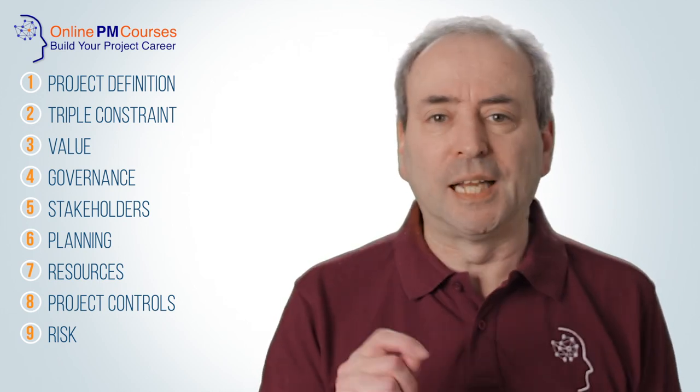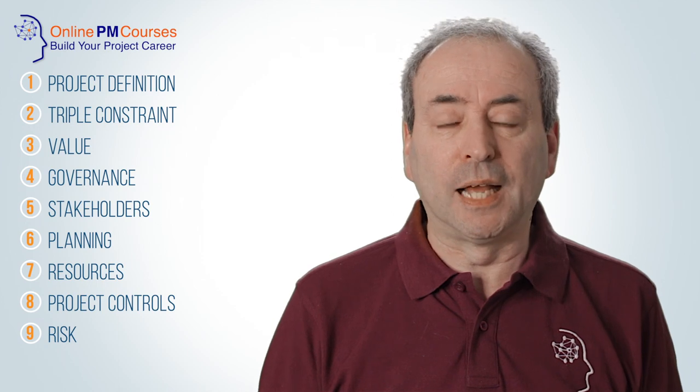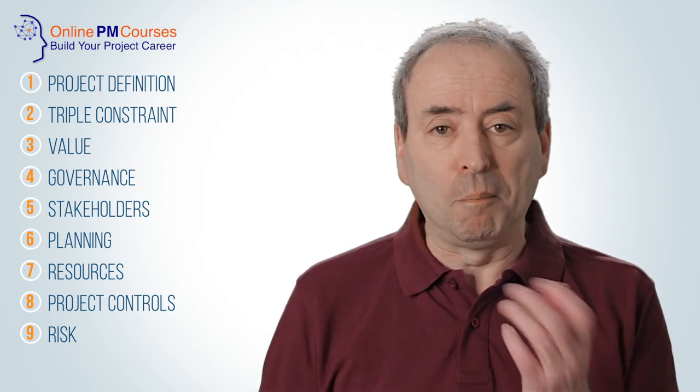The last two of my top 10 project management concepts are both project controls. At number nine it's risk — the concept that projects are uncertain and that uncertainty leads to consequences. A risk is an uncertainty that can have an impact upon outcomes. Once you understand that, we immediately see that risk is principally characterized by the level of uncertainty, the likelihood that it'll happen, and the impact that it will have if it does. Because projects are novel and need to be done within a fixed timescale using only available resources, projects are inherently uncertain and inherently risky. Consequently risk management is a core discipline for any project manager.